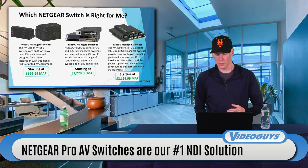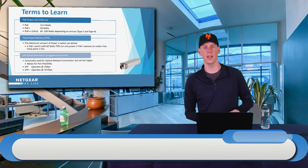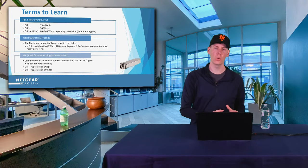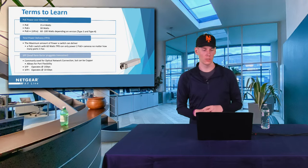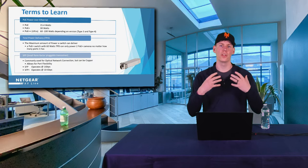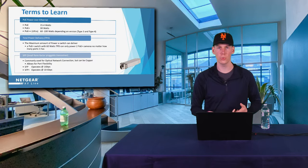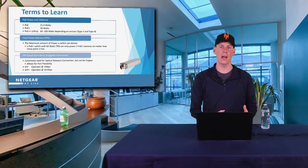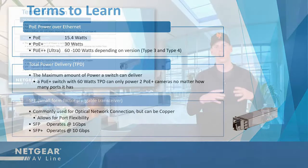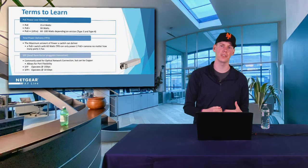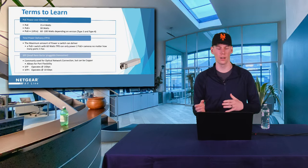How do you know which one's right for you? You need to learn some of these terms and understand what your equipment requires from the switch. The first thing to consider is the devices you're using — whether it's a camera, controller, NDI encoder, or decoder — and what the power requirement is. PoE stands for Power Over Ethernet, and there are essentially three flavors: PoE at 15 watts, PoE Plus at 30 watts, and PoE Plus Plus which ranges from 60 to 100 watts. You'll need to check the specific device's user manual to determine exactly how much power it needs.